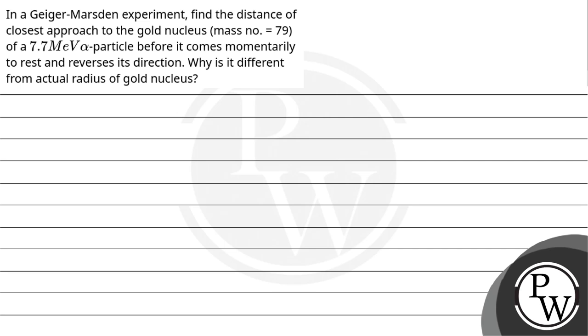Let's read the question. In a Geiger-Marsden experiment, find the distance of closest approach to the gold nucleus of a 7.7 mega electron volt alpha particle before it comes momentarily to rest and reverses its direction. Why is it different from the actual radius of the gold nucleus?